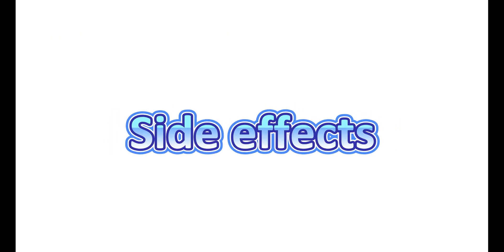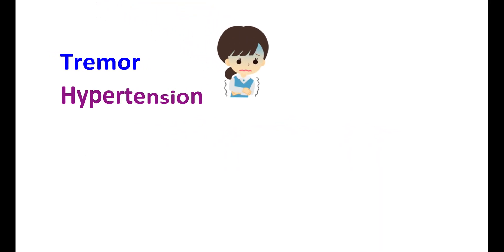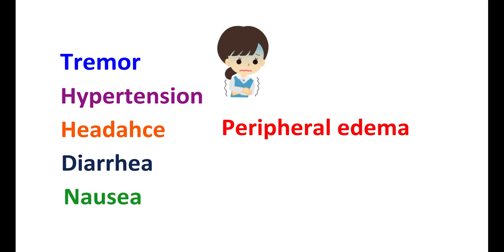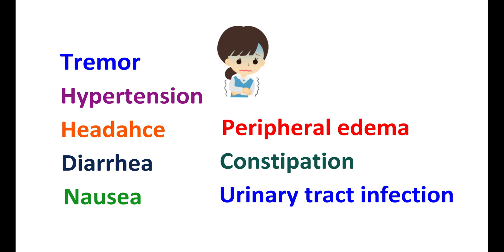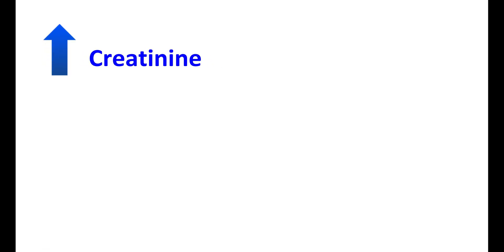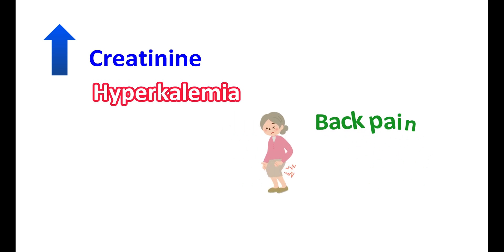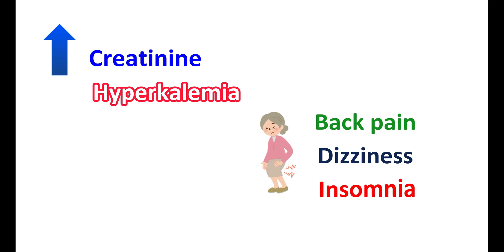Side effects of tacrolimus include tremor, hypertension, headache, diarrhea, nausea, peripheral edema, constipation, and urinary tract infection. Increased creatinine levels can be observed with use of tacrolimus. It can also increase potassium levels, leading to hyperkalemia. Other side effects like back pain, dizziness, and insomnia can also be observed.